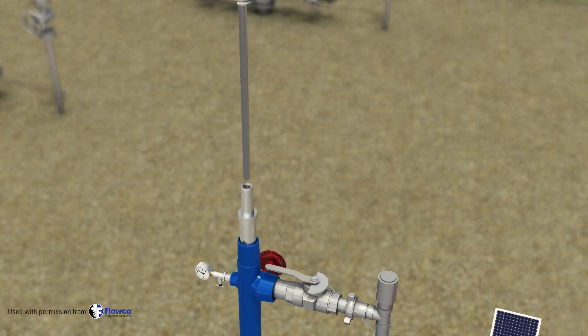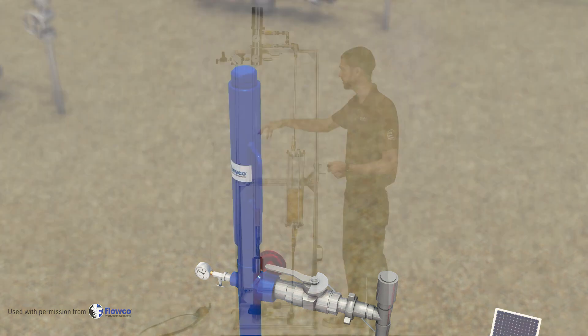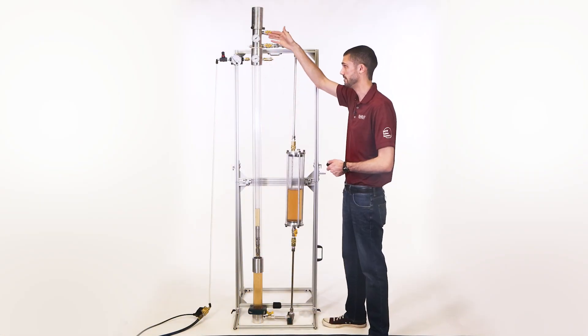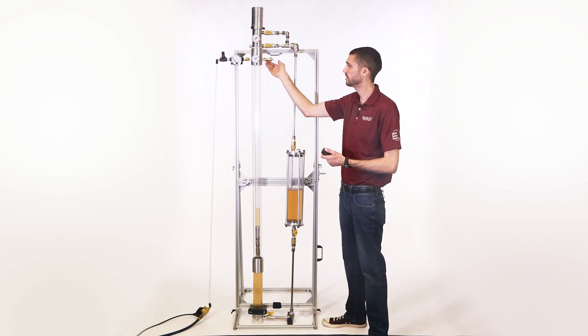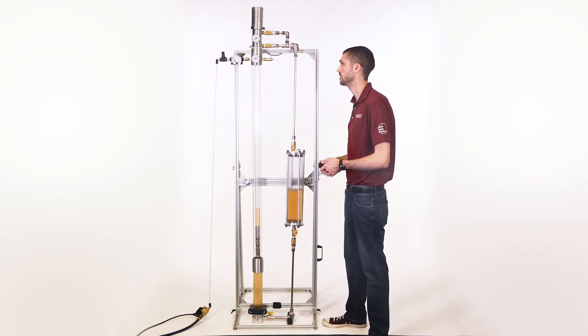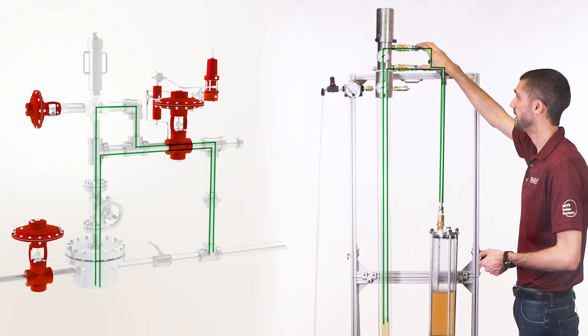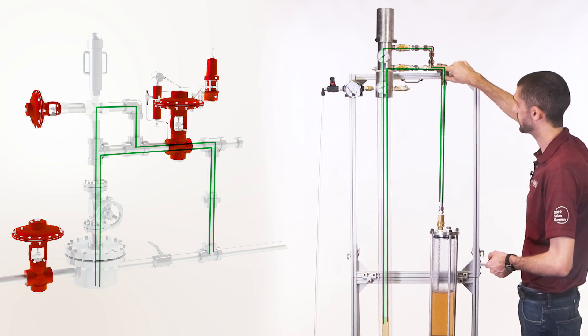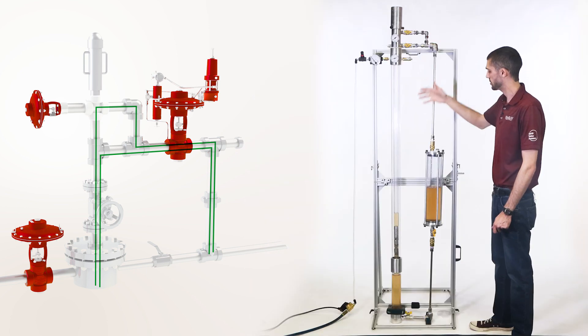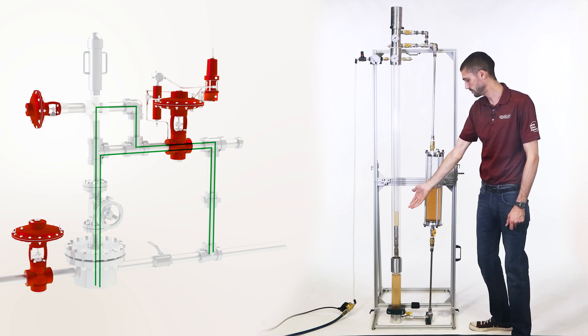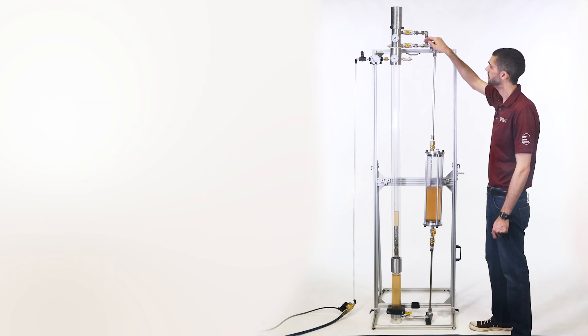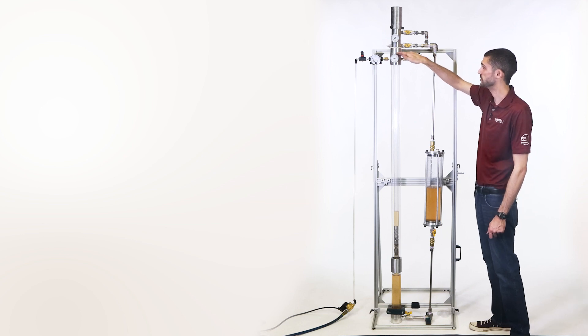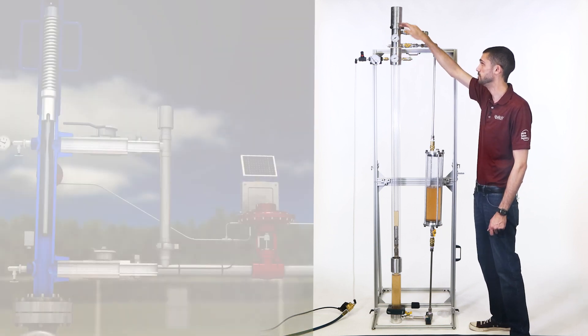When the auto-catcher is turned on, as soon as the plunger arrives in the lubricator, the auto-catcher will catch it and not allow it to fall back down the hole. So you'll notice on the lubricator there's two outlets going into the flow line. That's to allow the column of fluid on top of the plunger to escape and allow the plunger to enter the lubricator fully.